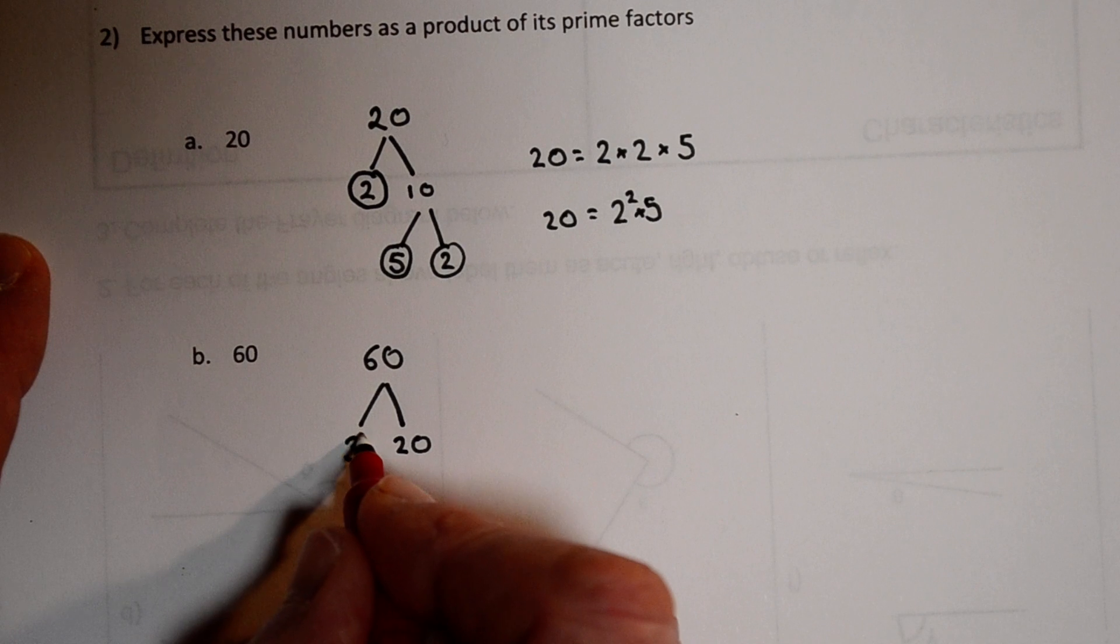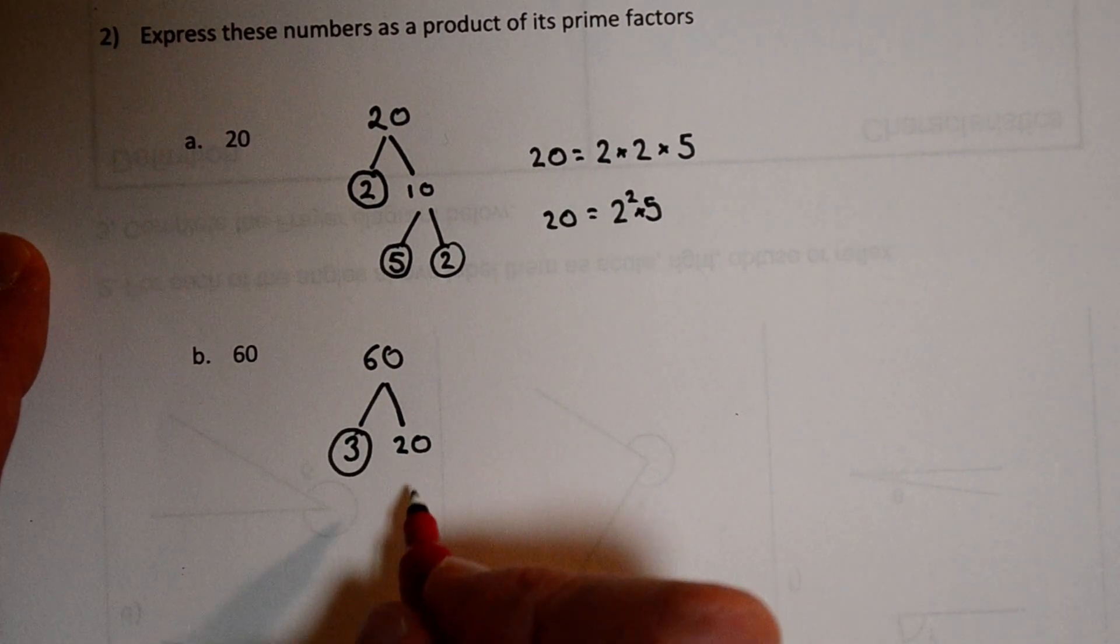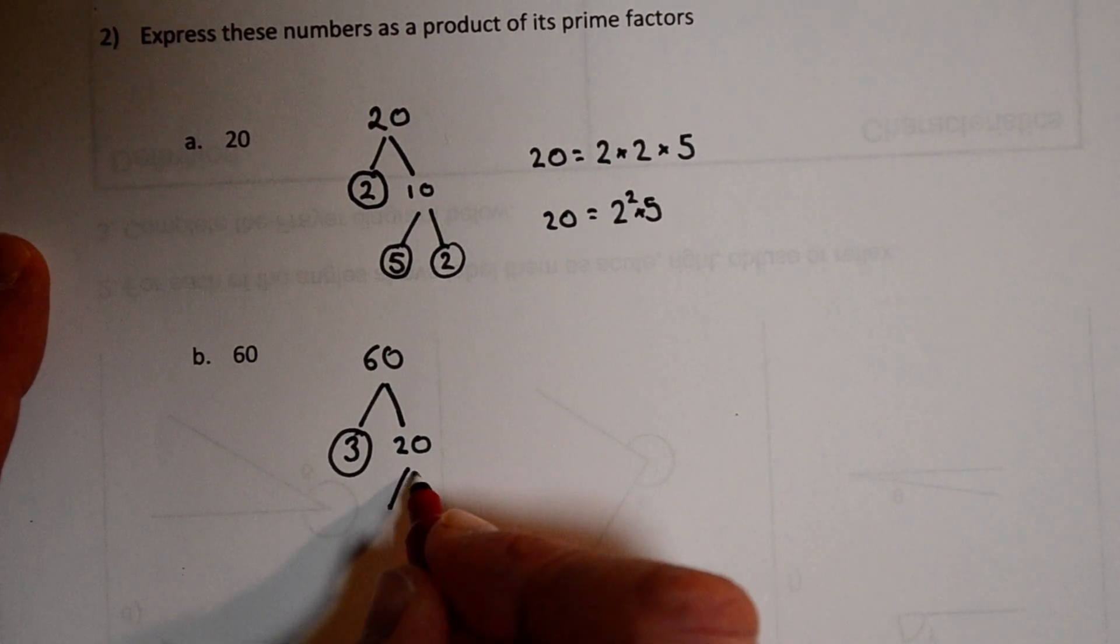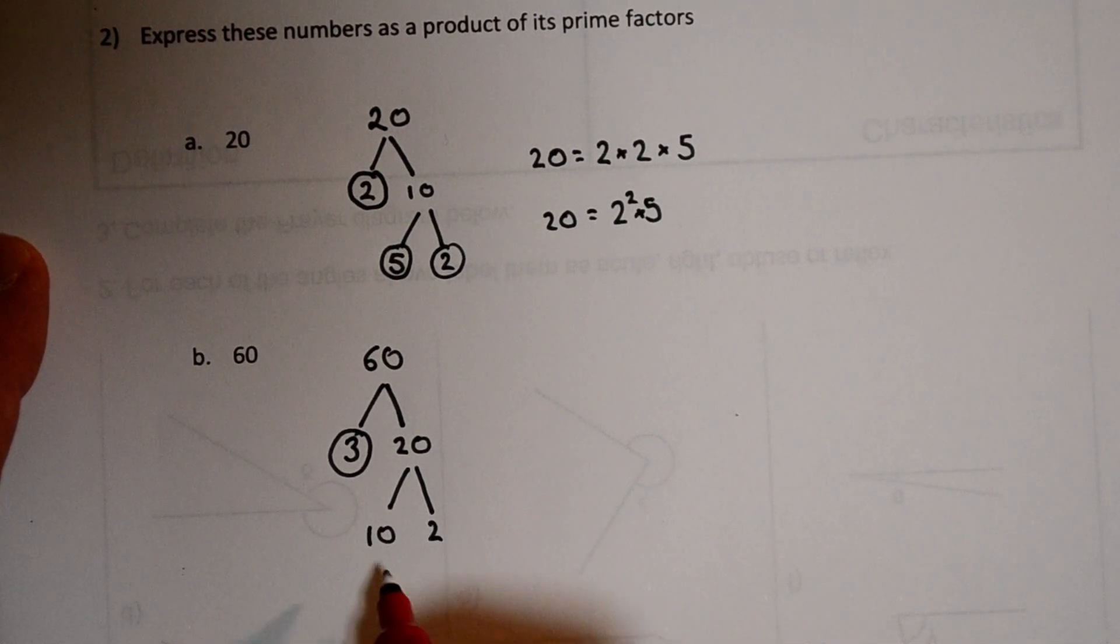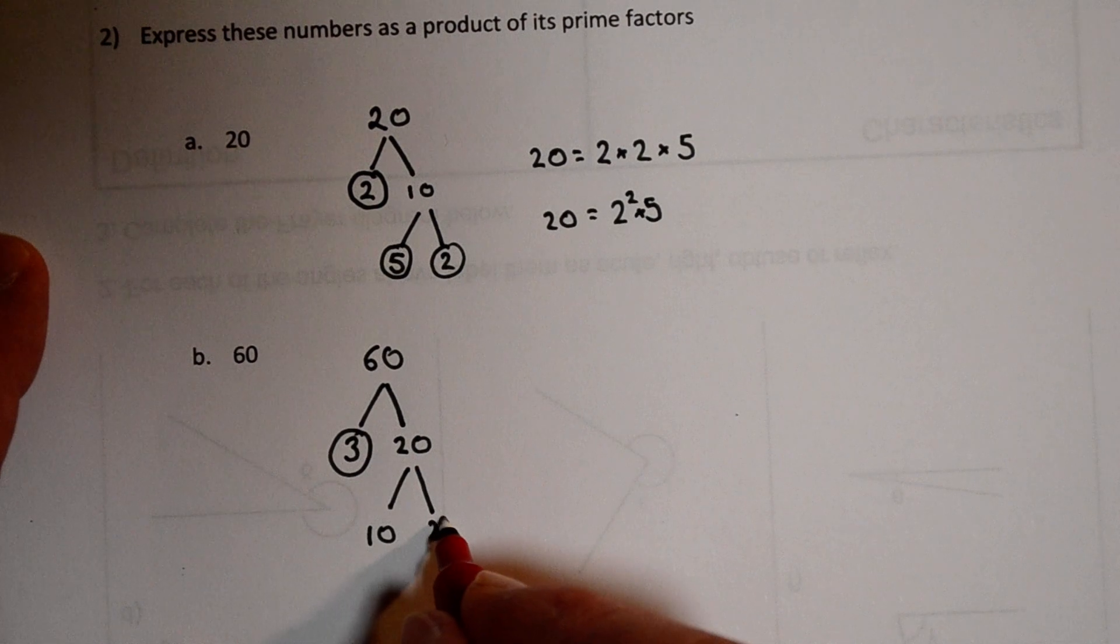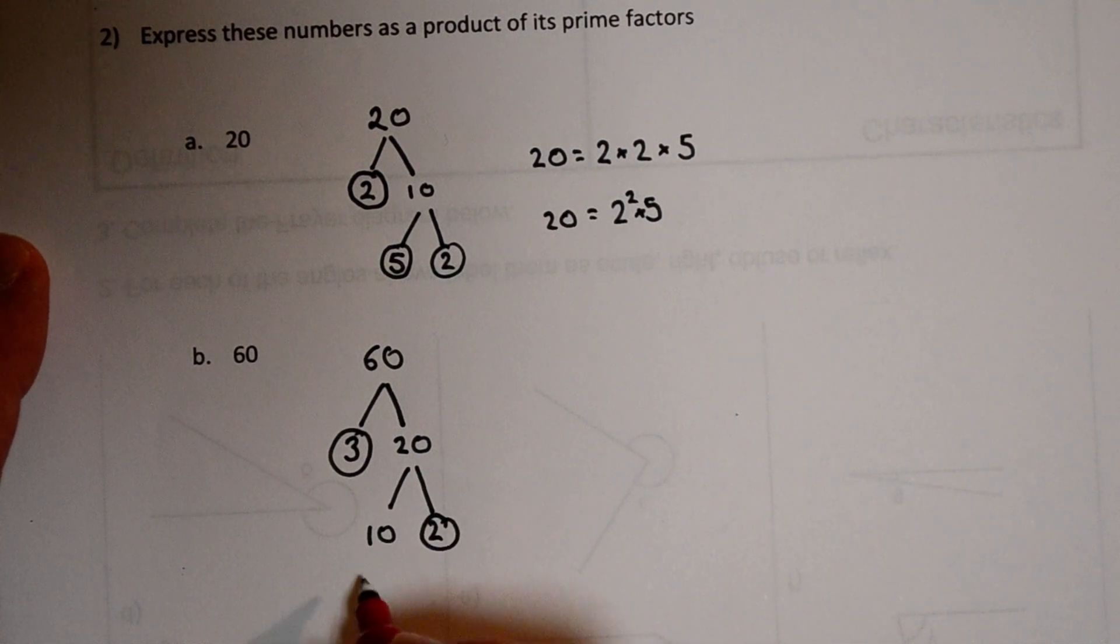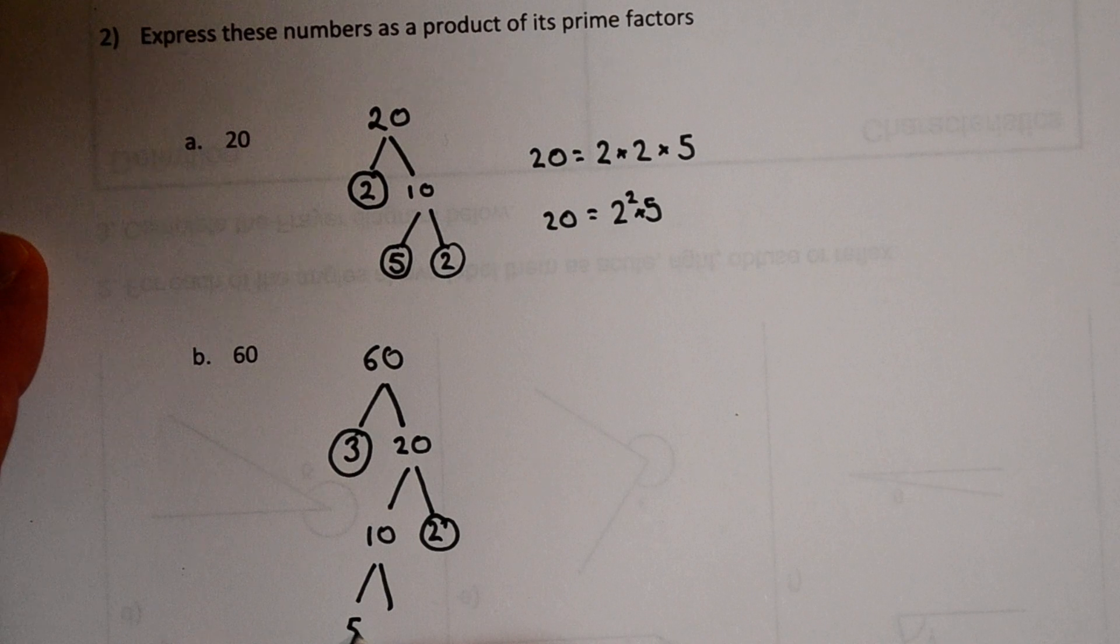3 is a prime. So that branch stops there. What about 20? 10 times 2. 10 is not a prime but 2 is. 10 is 5 times 2. And they're both primes.